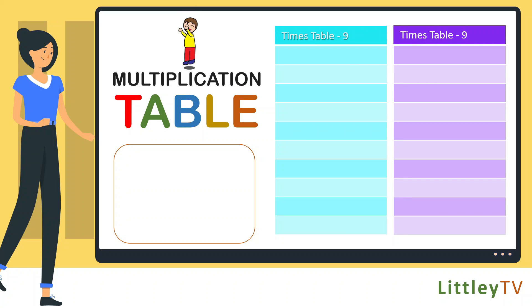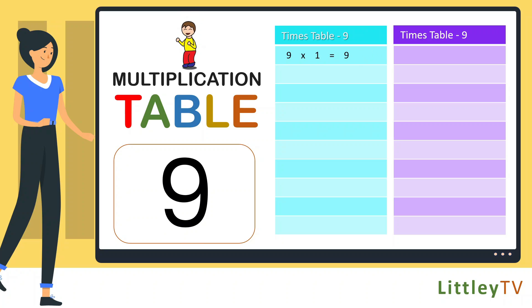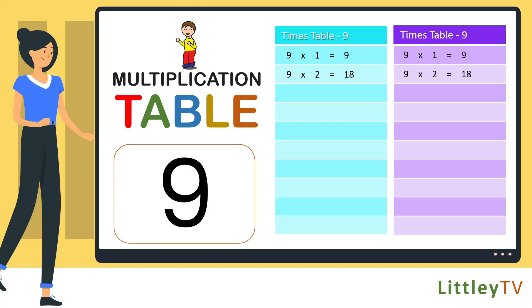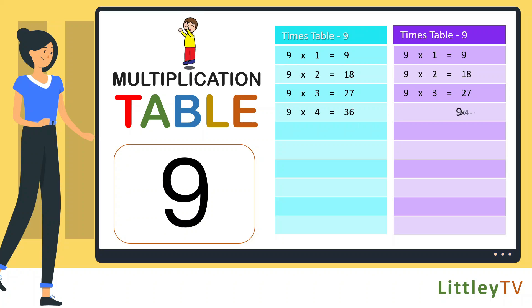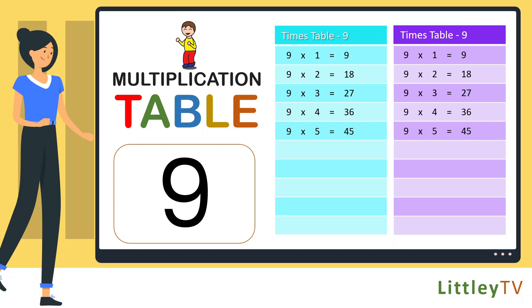Table of 9. 9 ones are 9, 9 twos are 18, 9 threes are 27, 9 fours are 36, 9 fives are 45, 9 sixes are 54.